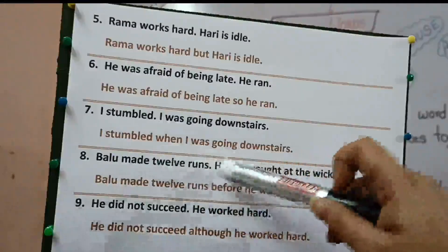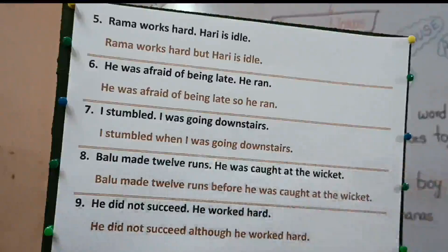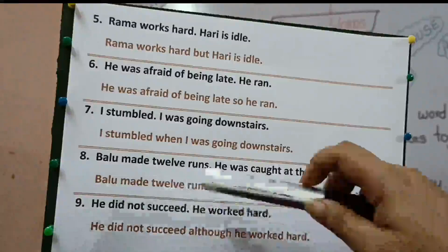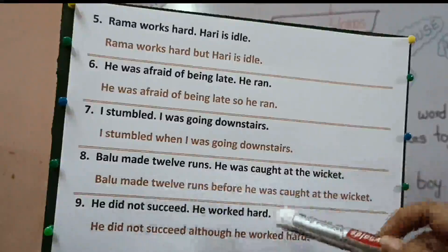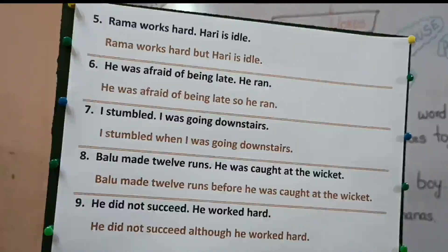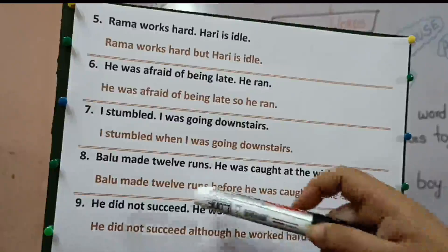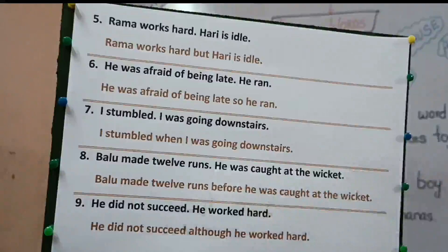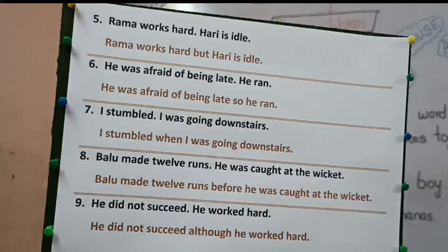Eighth: Baloo made 12 runs. He was caught at the wicket. Baloo made 12 runs before he was caught at the wicket — he had already made 12 runs, after that he was caught at the wicket, which means he was out. Here it's the timing given, so we will use 'before'. Ninth: he did not succeed. He worked hard. He did not succeed although he worked hard. The positive reason is given but it was not fulfilled, that's why we use 'although'.